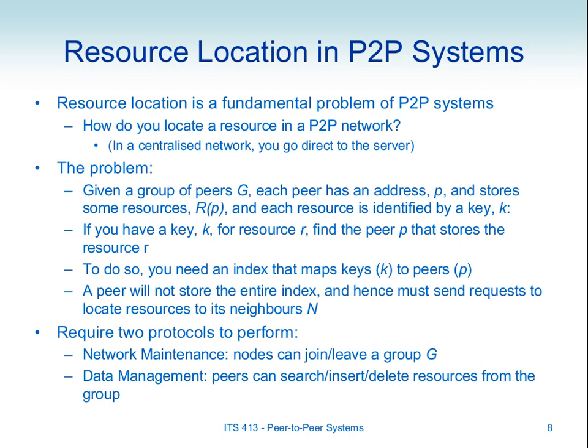Let's introduce some notation and use that to describe some different algorithms for finding resources. In a peer-to-peer system we have a group of peers — think of them as computers spread across the internet. A group G is the group; each peer has some address. In the internet that address may be an IP address, may be a port number for the application, so each peer can be identified. We'll use the notation P with a subscript to indicate the peer ID. Those peers store resources — for example, think of resources as files.